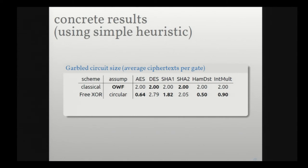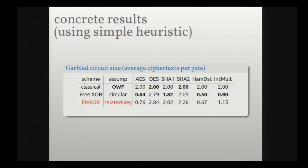Our metric is total size of the garbled circuit measured in ciphertexts per gate. In the classical scheme every gate costs two ciphertexts. In the free XOR scheme, XOR gates cost zero and non-XOR gates cost three. Our FlexOR instantiated with a monotone ordering found via heuristic gives performance a little bit worse than free XOR but comparable — and it raises the interesting theoretical question of what the cost of the circularity assumption is in this domain.